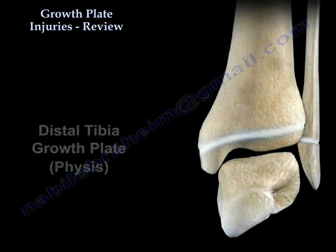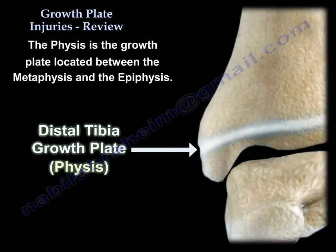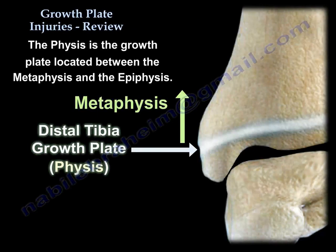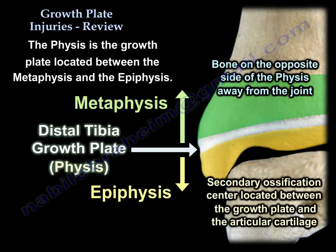Growth plate injuries review. The physis is the growth plate. It lies between the metaphysis and the epiphysis. The epiphysis is a secondary ossification center located between the growth plate and the articular cartilage. The metaphysis is the bone on the other side of the physis, away from the joint.